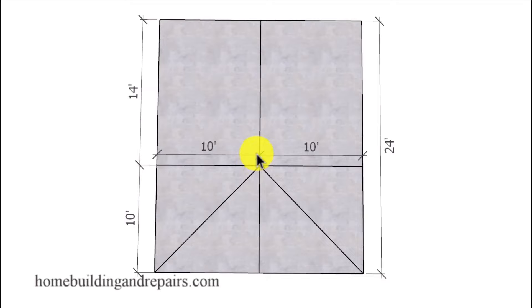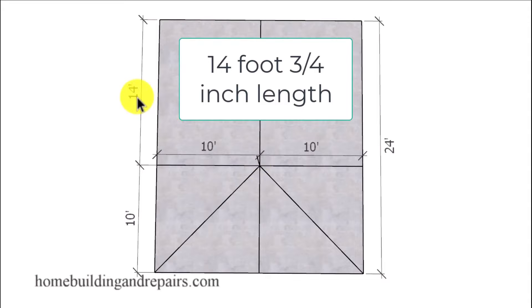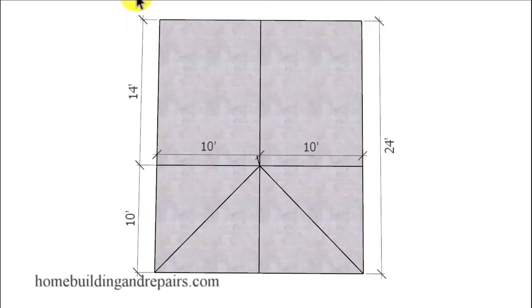Now in order to figure out the length of the ridge all we need to do is subtract half of the building span. So we have 20 foot in the total width and half of the span will be 10 feet. 10 feet in this direction, 10 feet in this direction. And I'm simply going to subtract half of the span of the building from the total length of the building, and then add half of the thickness of the roof ridge, which is going to provide us with a 14 foot and three quarter inch long ridge for this particular example here.